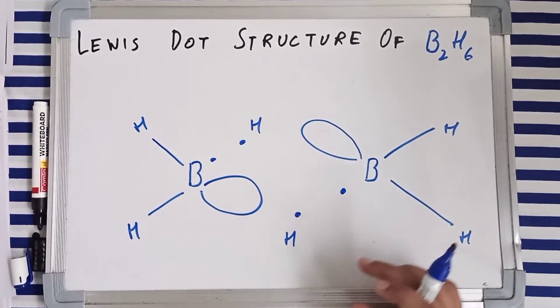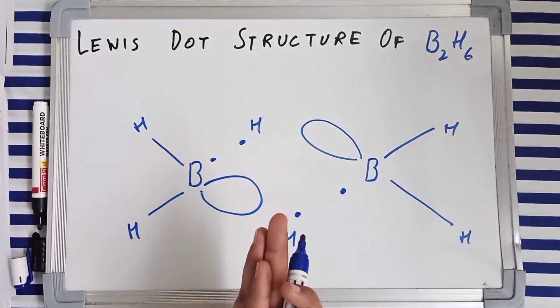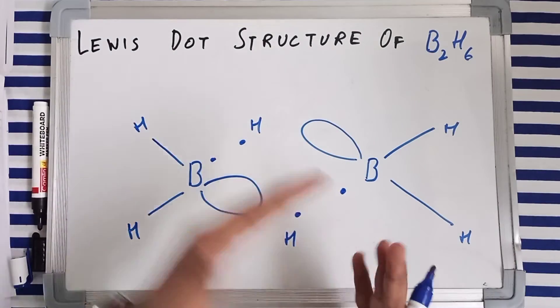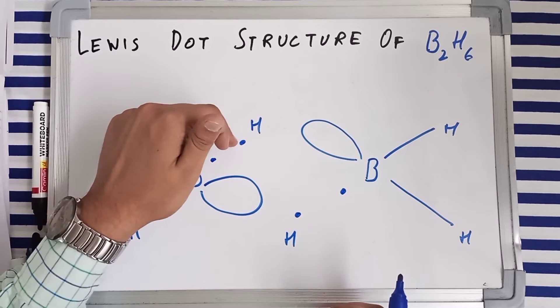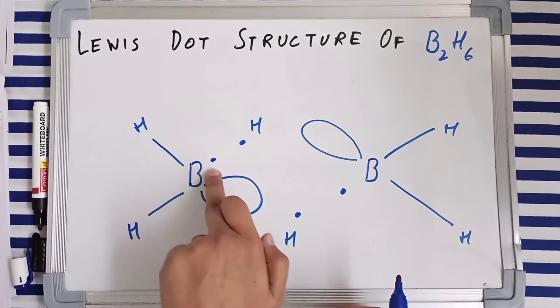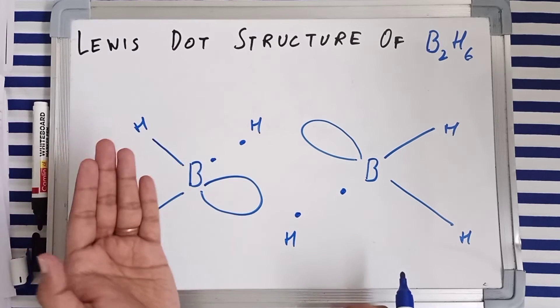One, two. Now what happens is that for the formation of B2H6, these two have to come along. So this is a vacant orbital, you got an electron from the hydrogen. Hydrogen has donated its electron.